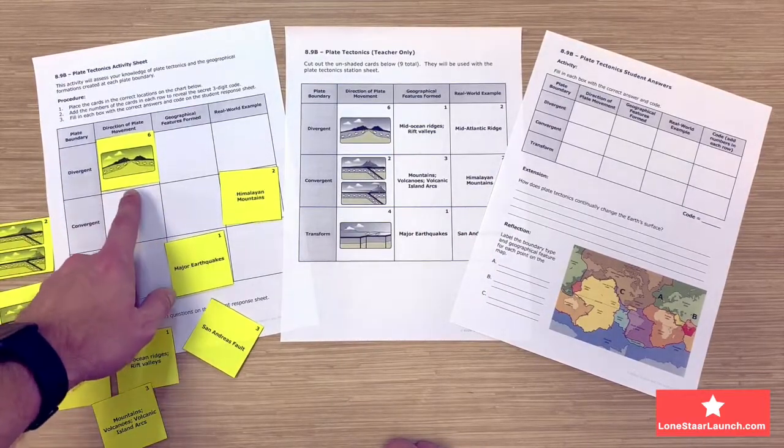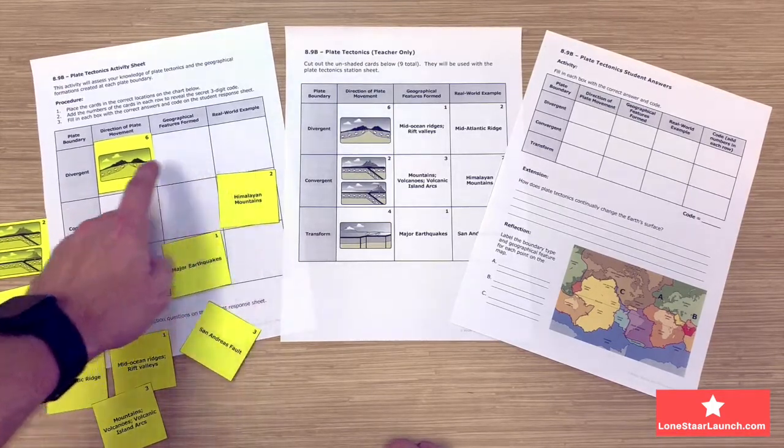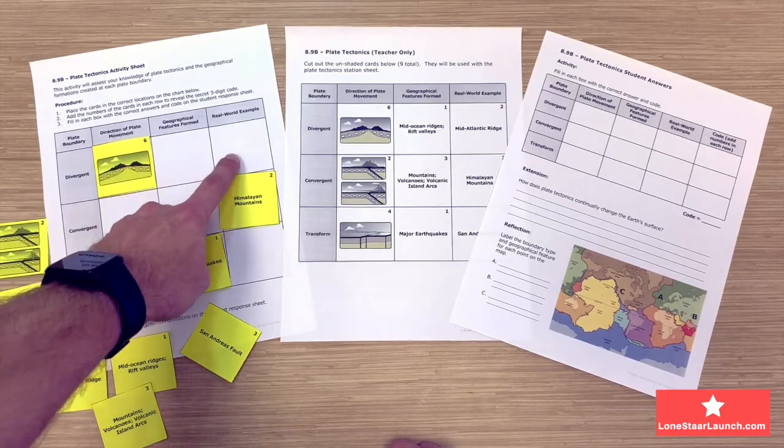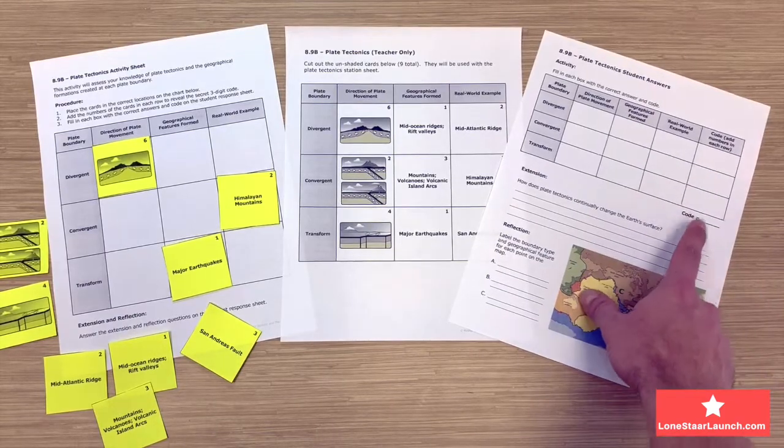Students are going to place those cards in the correct spot on the chart based on which category they're looking at, and up in the top right corner of each card there's a number. Once students place the cards on the chart, they're going to add the numbers in the right corner which is going to give them a code.